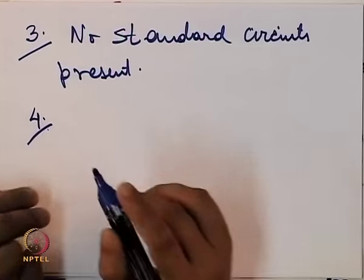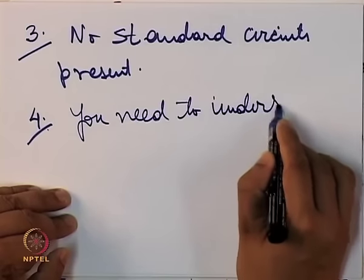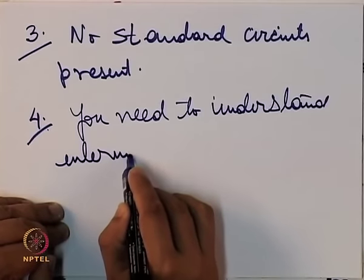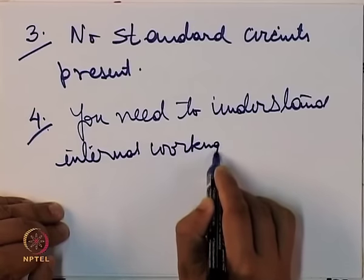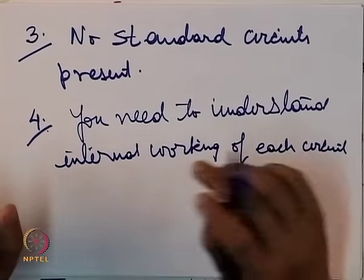Fourth, in a digital circuit with many adders, you do not need to understand the internal circuit of each adder — you just need to know its properties, what input it takes, and what output it generates. On the other hand, because of the limitations of reuse in analog circuits, you have to know the internal working of each and every circuit. The fourth difficulty in designing analog circuits is that you need to understand the internal working of each circuit.